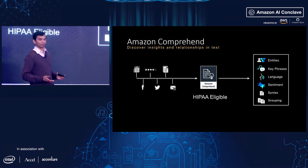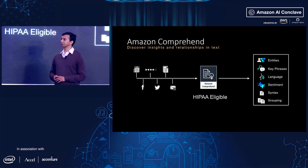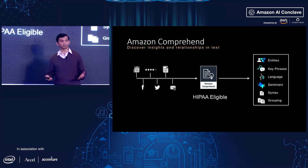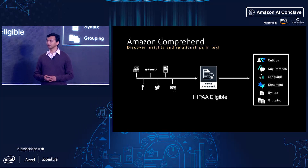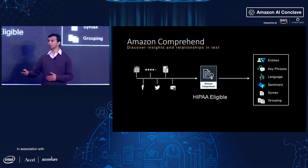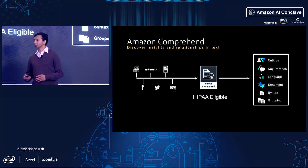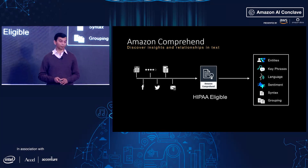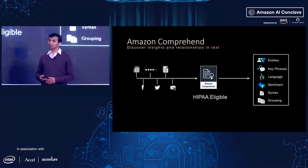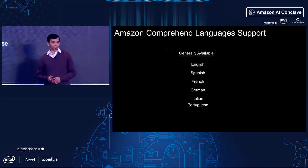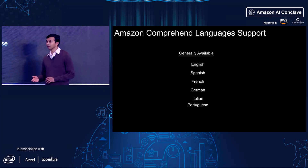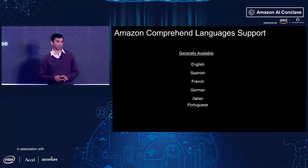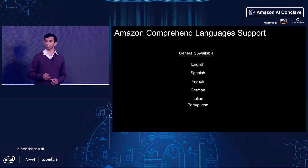If you have a big corpus of emails and want to know why your customers are writing to you, you can run all those emails through topic modeling and it will tell you the top ten topics your customers are writing about. It's a HIPAA-eligible service. Recently, we launched support for a number of languages — today we support English, Spanish, French, German, Italian, and Portuguese.